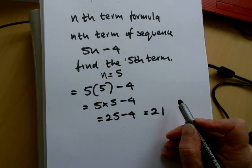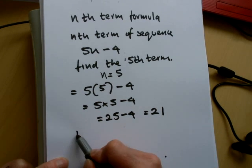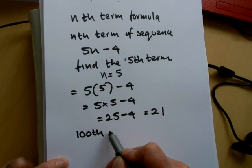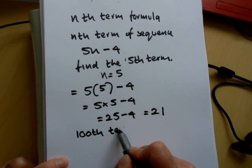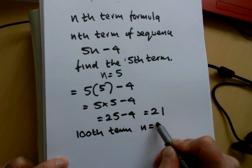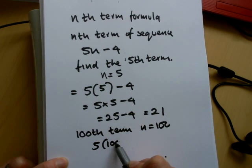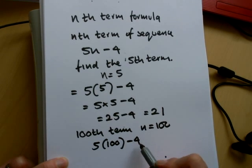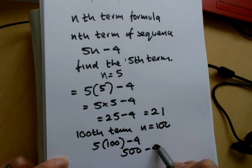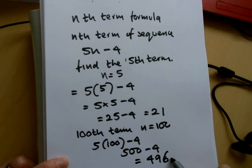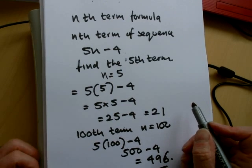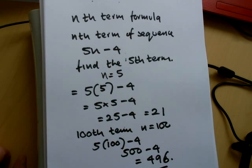Suppose I was asked what the hundredth term of the sequence would be. In this case, n is 100. So we'd have 5 times 100 minus 4. That's 500 minus 4, which is 496. So those are two examples of using the nth term formula as well as some substitution. Thank you.